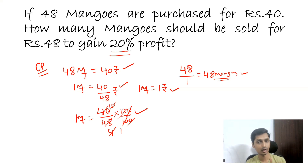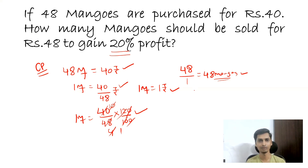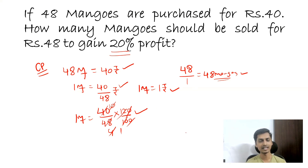So you found one mango should be sold for one rupee to get 20 percent profit. If you sell one mango for one rupee, then for 48 rupees you will sell 48 mangoes. So the answer is 48 mangoes. I believe you understood this problem, and in upcoming sessions I'll try to bring more challenging questions — until then, stay connected with Creative Training Solutions. Thank you so much for your patience and have a great day. Keep learning, keep practicing.